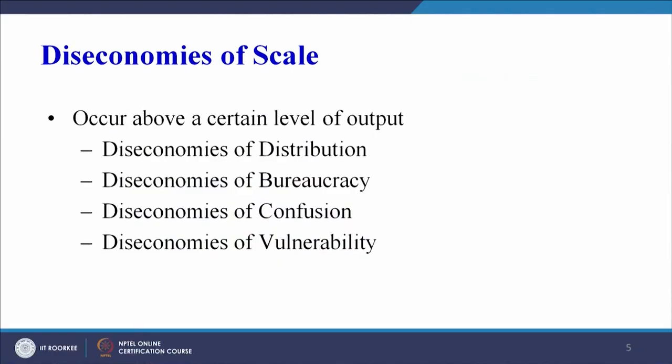After the best operating level, diseconomies of scale start to set in. This occurs above a certain level of output. It happens because of diseconomies of distribution, diseconomies of bureaucracy, diseconomies of confusion, and diseconomies of vulnerability. In totality, chaos starts to set in and we are not able to utilize or plan our capacity properly.